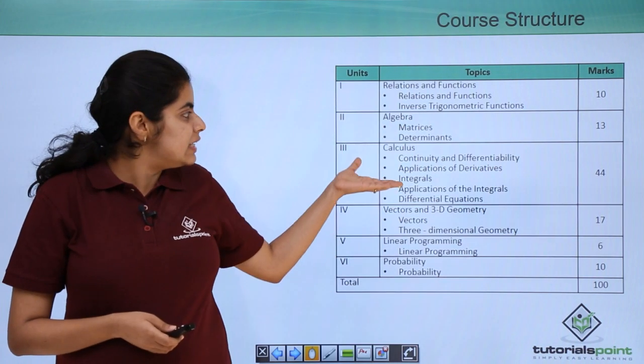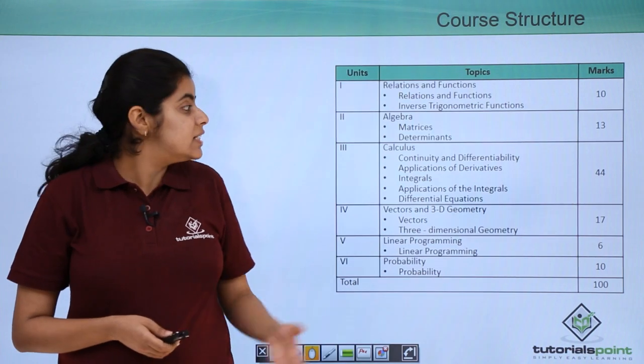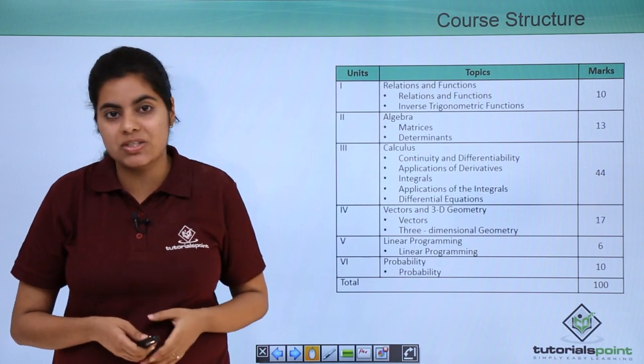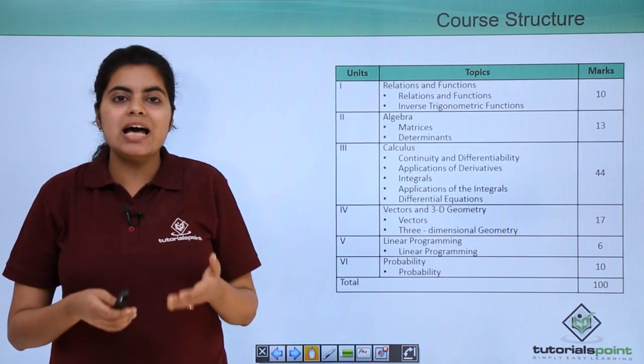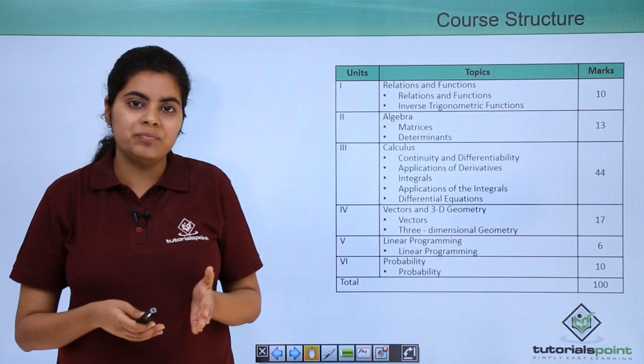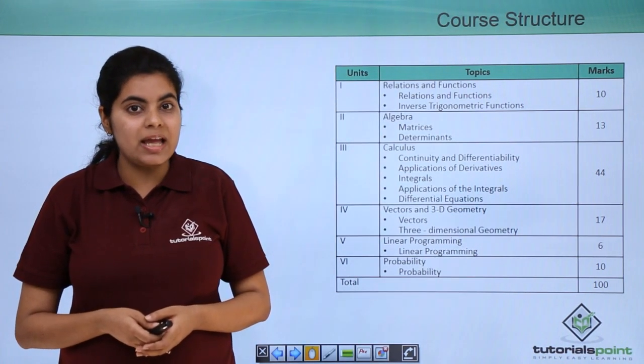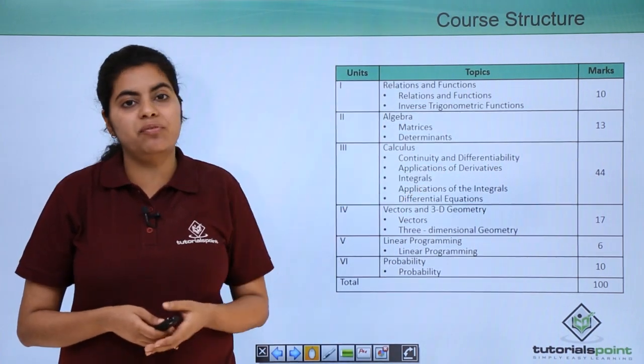The next unit that is under picture is calculus and it is a very big unit. It has namely five long chapters and these five chapters are basically considered as one of the toughest ones with respect to the whole maths syllabus. And that is why because of its huge importance it covers for 44 marks.